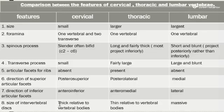The size of the intervertebral disc — the disc present between the vertebrae — for cervical is thick relative to the vertebral bodies, for thoracic it is thin relative to the vertebral bodies, and for lumbar it is very massive.